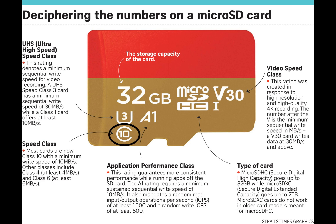The next number — the 10 in a circle — is the speed class. Most cards are now Class 10, with a minimum write speed of 10 MB/s. Other classes include Class 4 and Class 6, which are older cards. Next, we have the A rating — Application Performance Class. This rating guarantees the most consistent performance while running apps off of the SD card. I primarily use micro SD cards as external storage, so I want the faster the better. The A is the application performance rate.